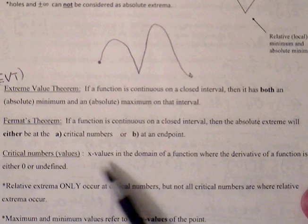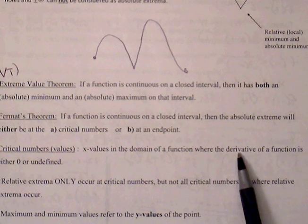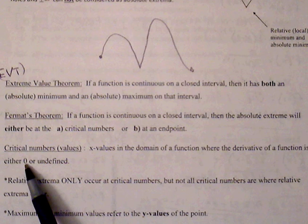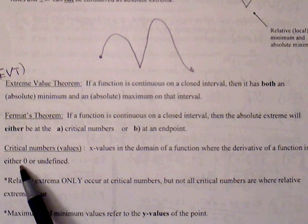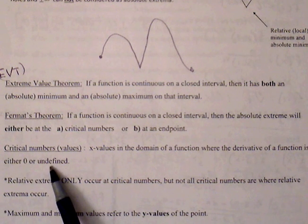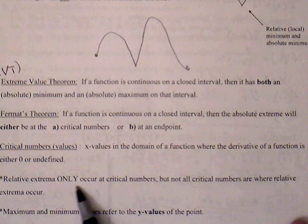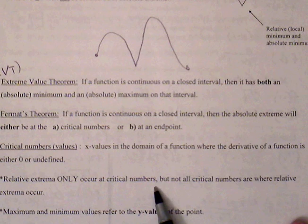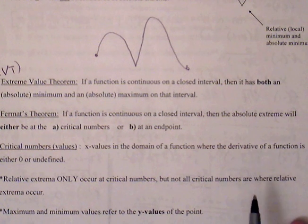Critical numbers are x-values in the domain of the function where the derivative is either zero (numerator of the derivative equal to zero) or undefined (setting the denominator of the derivative equal to zero). Relative extrema only occurs at critical numbers, but not all critical numbers are where relative extrema occurs.